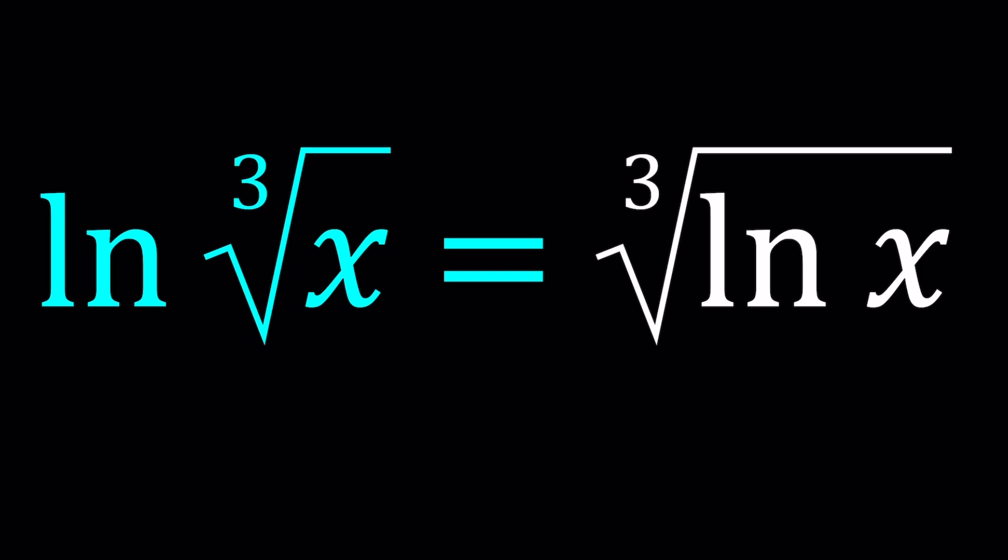Now something to think about, first of all. This kind of looks like a property of logs, right? When you have a power or a root, can't we just move it to the front? So for example, when you have ln x to the power n, isn't it the same as n times ln x? Yes. But this is not the same thing.